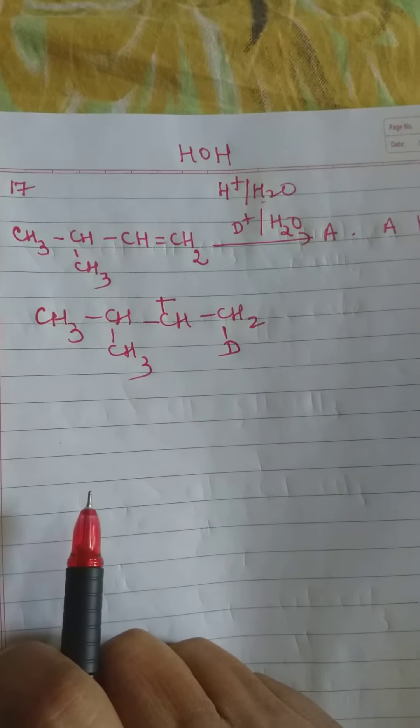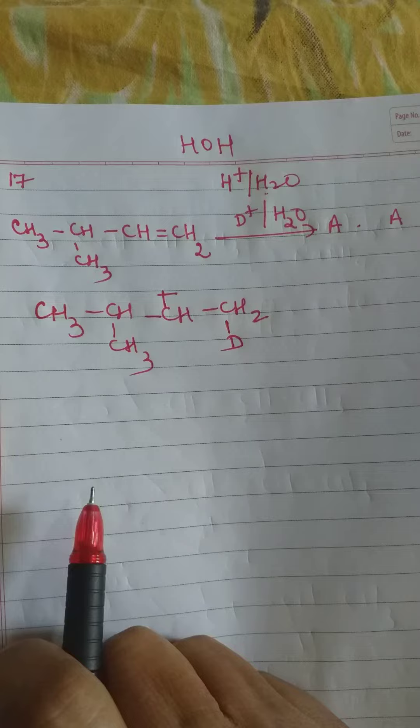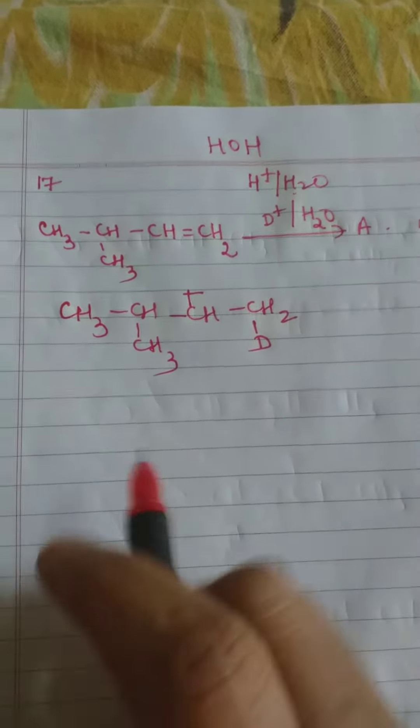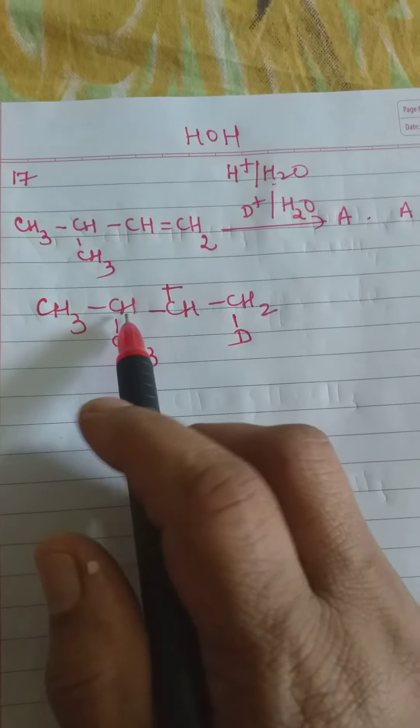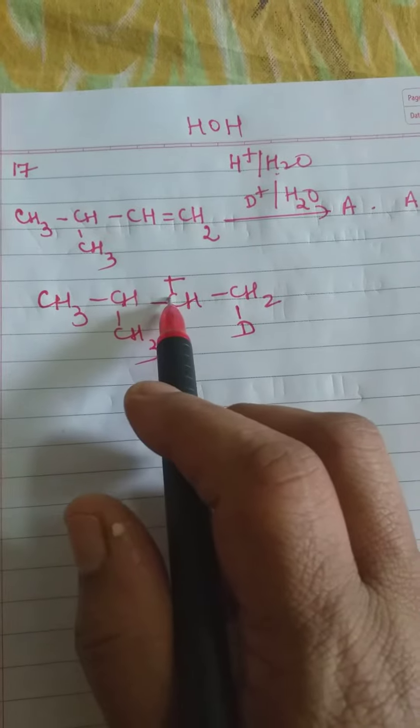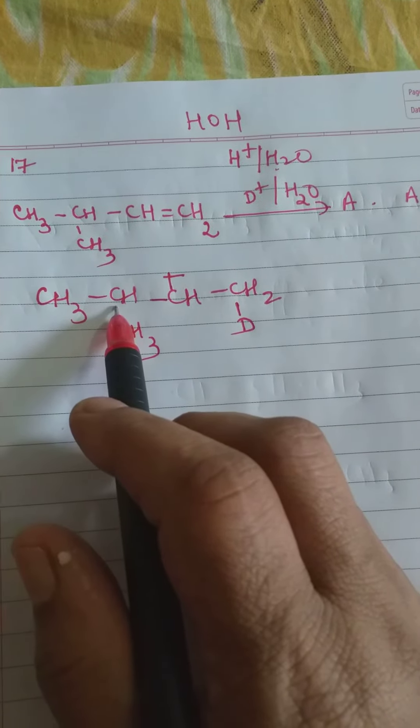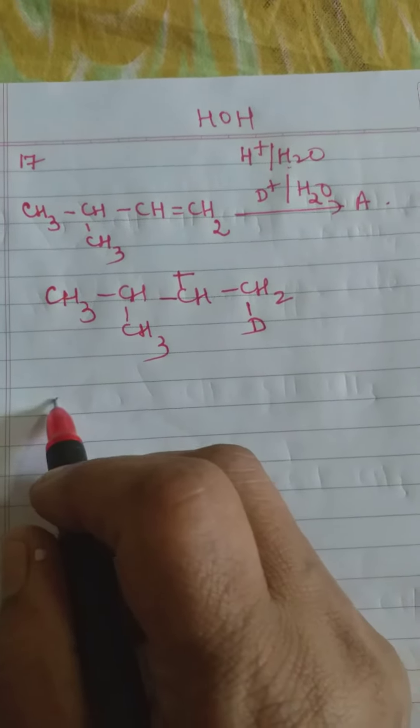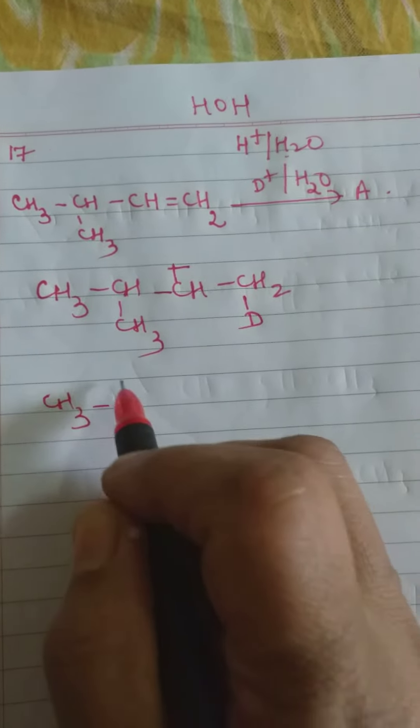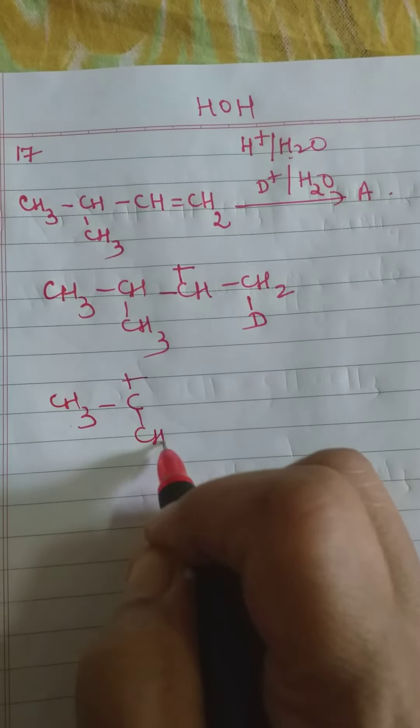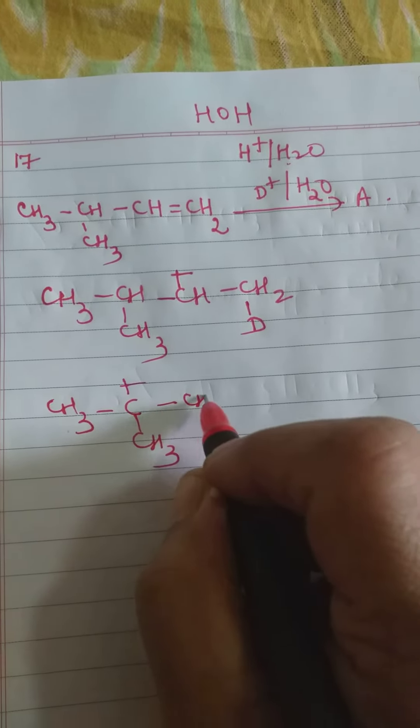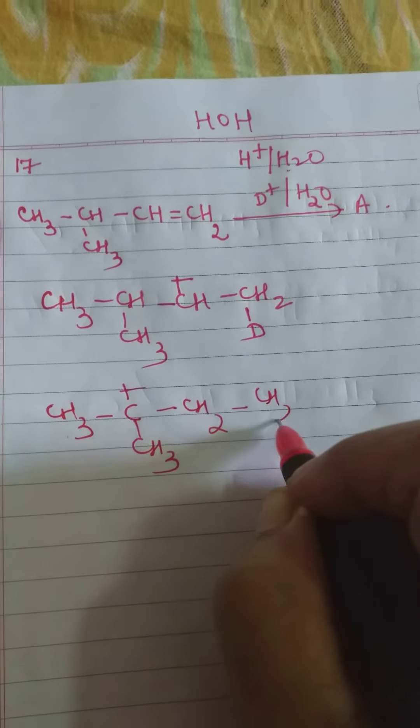Now, acid hydrolysis proceeds via carbocation rearrangement. So, this is a secondary carbocation. If there is a hydride shift, this will become a tertiary carbocation which will be more stable. So, therefore this will now form CH3-C plus-CH3, H minus. Hydride is shifted here giving you CH2 and CH2D.